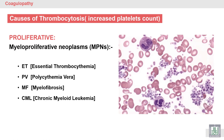The second group of diseases that lead to thrombocytosis is proliferative. Proliferative means increasing the productivity of the myeloid stem cell. The myeloid stem cell is the mother cell responsible for production of megakaryocytes and therefore platelets. This group is called myeloid proliferative neoplasms (MPNs).